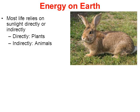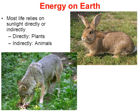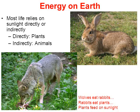Indirectly, consumers — heterotrophs such as a rabbit — get their energy indirectly from the sun. Rabbits are herbivores; they eat plants, and plants feed directly on sunlight. Meat eaters like wolves also get energy indirectly from the sun. Wolves get their energy directly from eating rabbits or smaller animals like rodents, which in turn fed on plants that got energy directly from the sun.